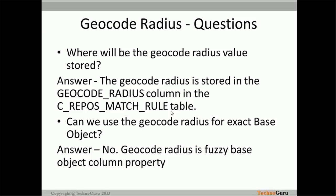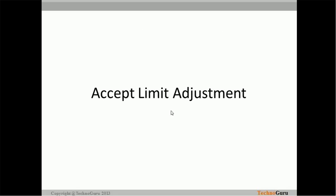A common interview question: where is the geocode radius value stored? Since it is a property, it must have a persistent state — it is saved in a column called geocode radius inside the C_REPOS_MATCH_RULES table. If you open that database table, you will find this column and the value will be populated based on what you specify. Can we use geocode radius for an exact base object? No, we cannot — it is a fuzzy base object property only.